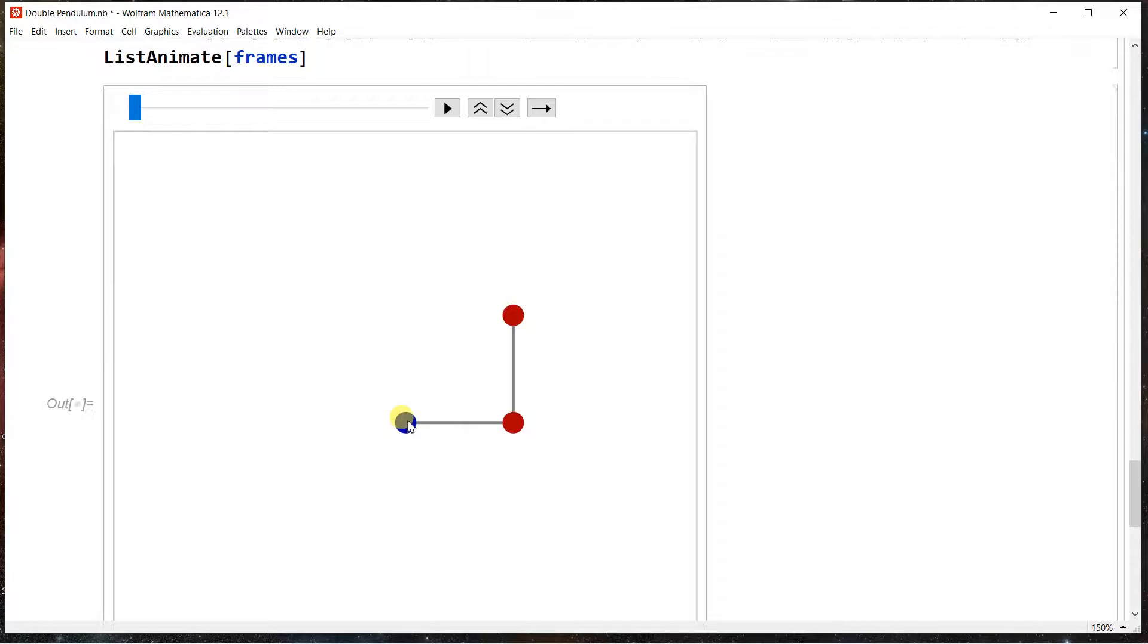So the blue dot is the pivot point. That's not a mass. Only the red ones are masses. And this is the initial setup. You have mass 1 out at a horizontal orientation. And then mass 2 is 90 degrees straight up.